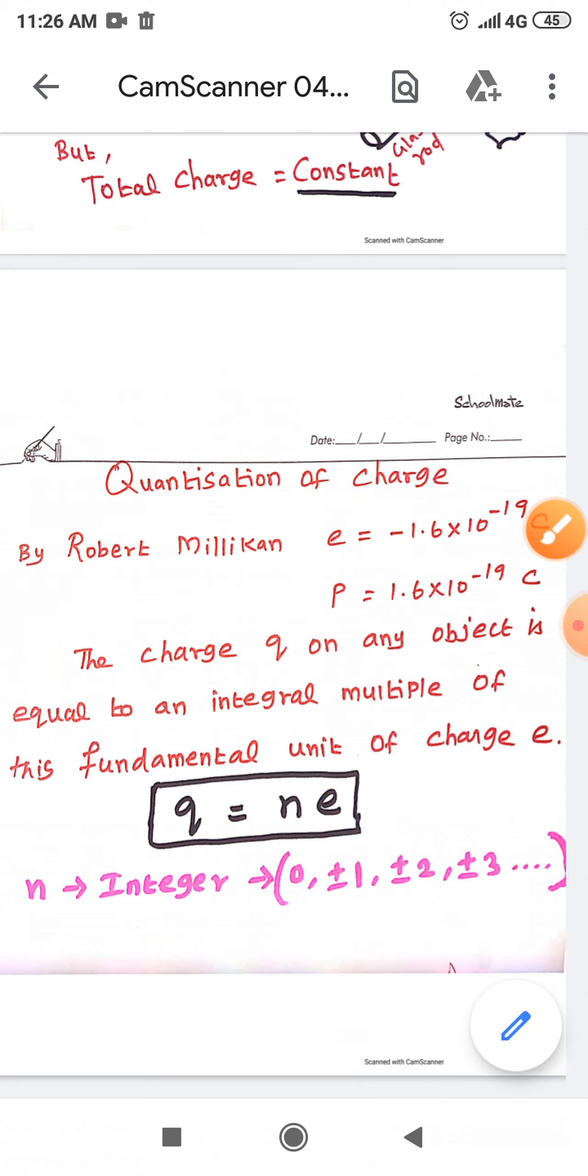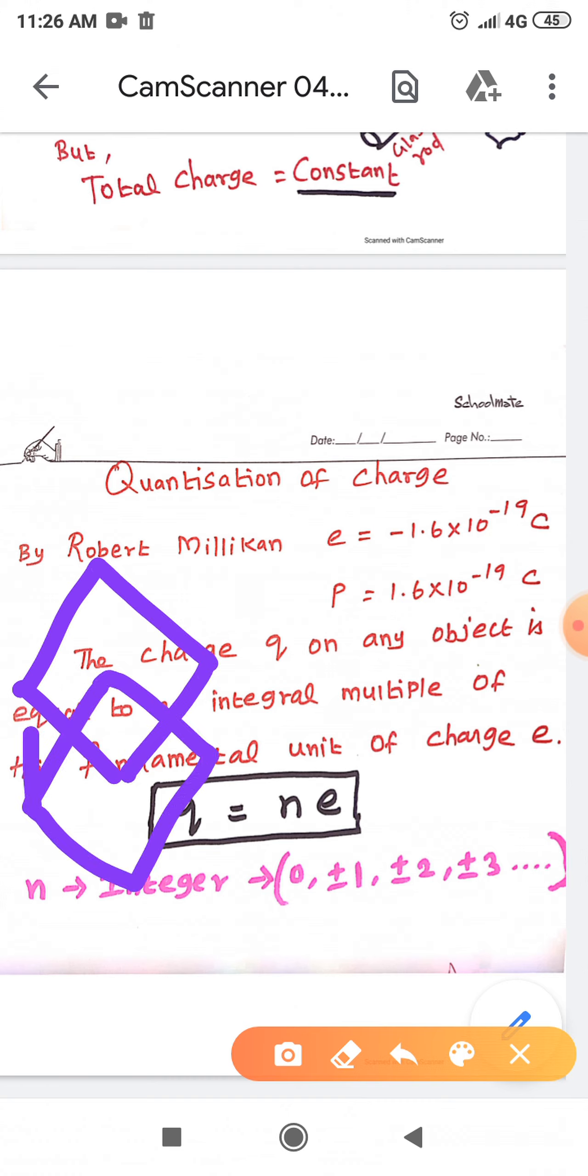Now, you are going to consider a small domain to understand the quantization of charge. Suppose this domain consists of only one electron, then what will be the charge of this domain?